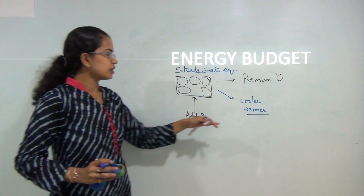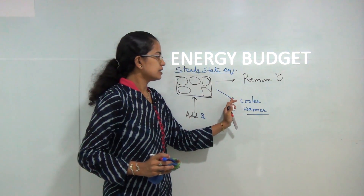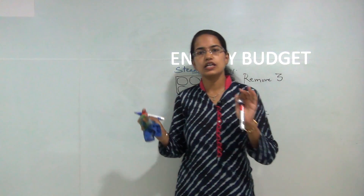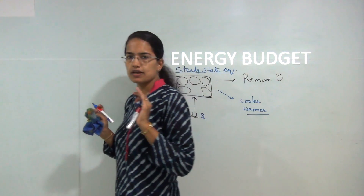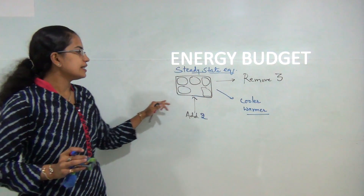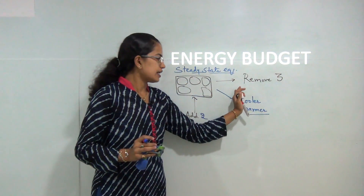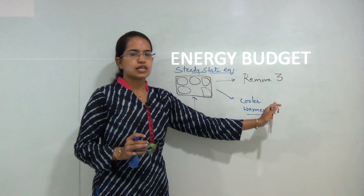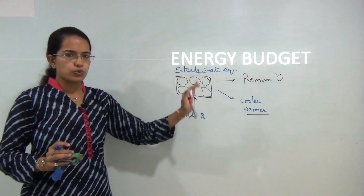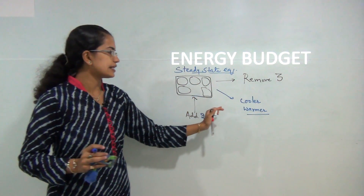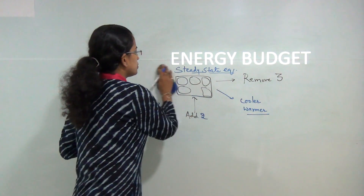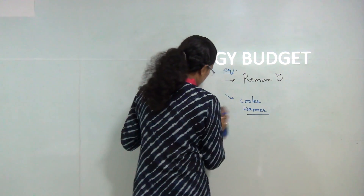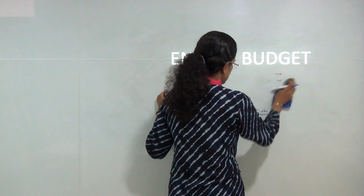It's important to understand that Earth tries to maintain a uniform equilibrium, and there are rarely cases where the Earth is either getting cooled or getting warmer. This is how we understand the energy budget.